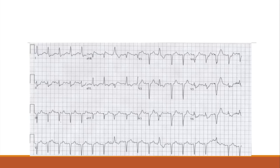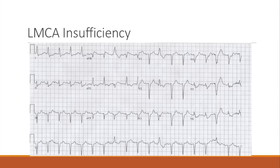Tell me what you see. We've got depression all over the place. Do you see elevation anywhere? In AVR. So if you saw depression throughout and scanned AVR and saw changes — even subtle — is this the pattern where depression in the inferior leads makes you look at AVR? We don't see elevation in lead 1 or AVL, so it's not a high lateral MI. This is actually left main coronary artery insufficiency.